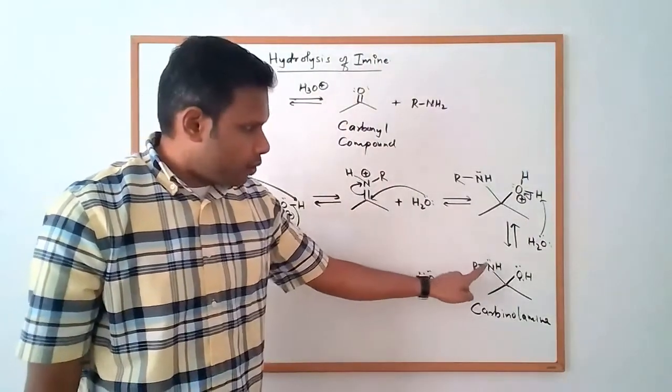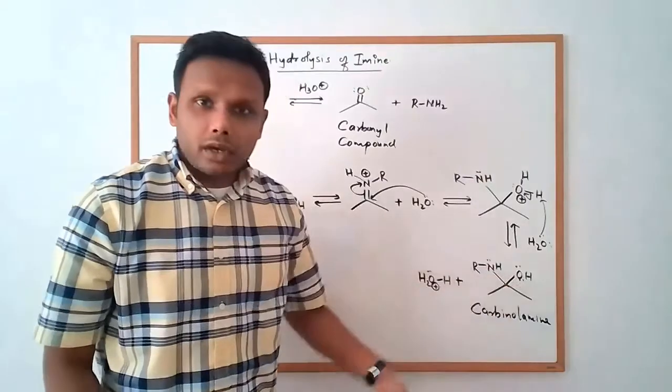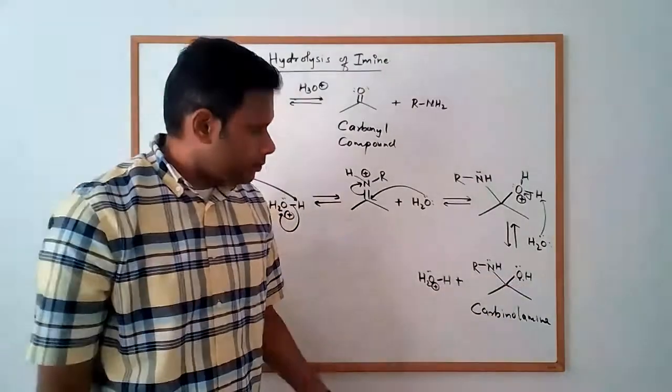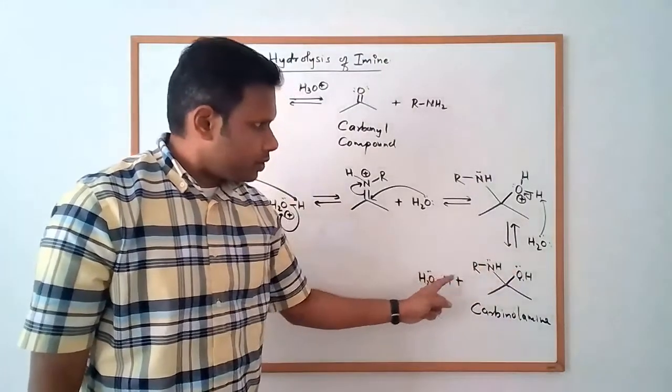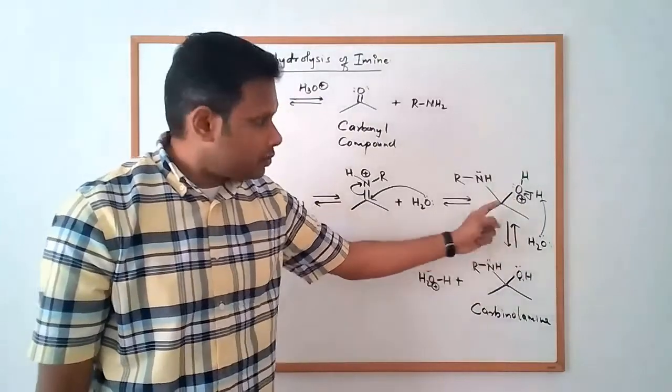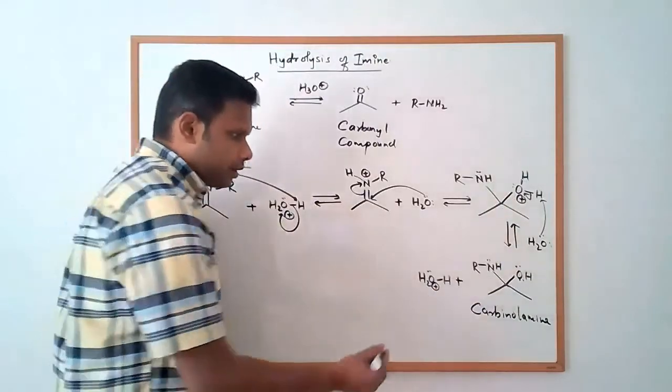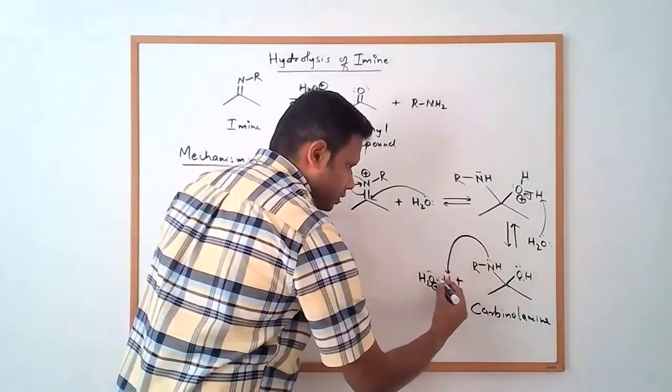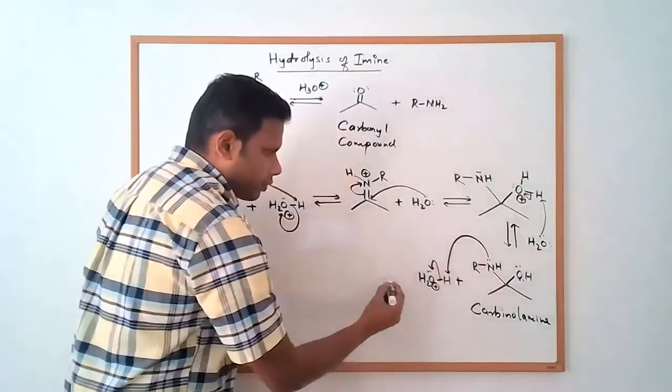under acidic conditions both the nitrogen or the oxygen can get protonated. If the oxygen gets protonated then we are on our way back, that's where we have the reversible arrow here, but when the nitrogen gets protonated here we are moving forward.